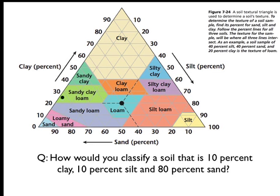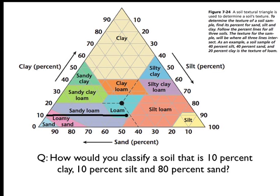So, we start off with our clay on this side — here's 10%, we go straight in towards this direction. Actually, my line was really off on that with my shaky hand, let me try that again. There's 10, going all the way across. And then 10% silt, so we'll draw our silt line with red, start up here and come down in this direction, all the way down here.